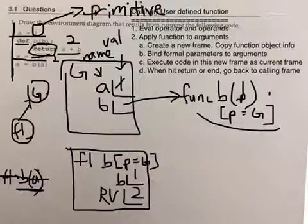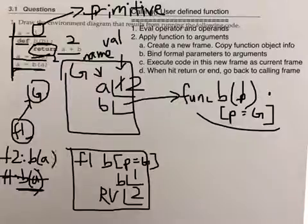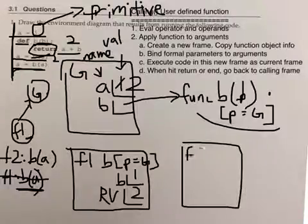So A previously had a binding of 1, but now it has a binding of 2. And then we follow the same steps for this second line here. I'll do it much faster now. So we evaluate B. B is this function. We evaluate A. A is 2. So now we have a new call and a new frame. So our frame is F2.